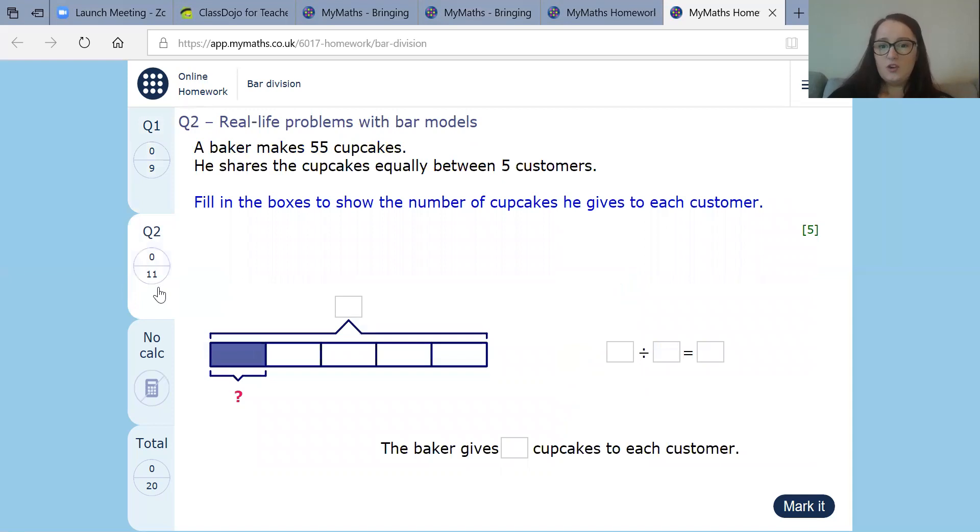So now what we're going to do, there's a couple of questions that I'd like you to look at. So these will be different to yours, so don't worry. So a baker makes 55 cupcakes and he shares the cupcakes equally between five customers. So here, all together here, this is 55 cupcakes. So I'm going to put 55 there and he shares the cupcakes equally between five customers. So this is one customer, two customer, three customer, four customer, five customers. And it says here, the baker gives how many cupcakes to each customer? And we've got a little question here, but we need to fill out as well.